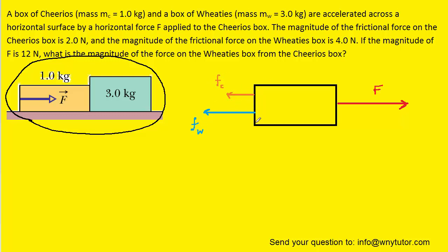Now since we're combining the two boxes into a single system, we would have to combine the masses, and since the mass of one box is one kilogram and the other box is three kilograms, we know that the mass of the combined system would be four kilograms.